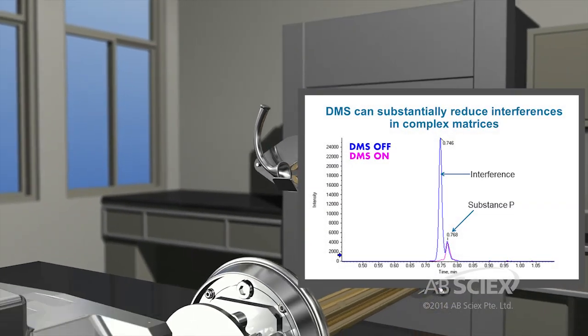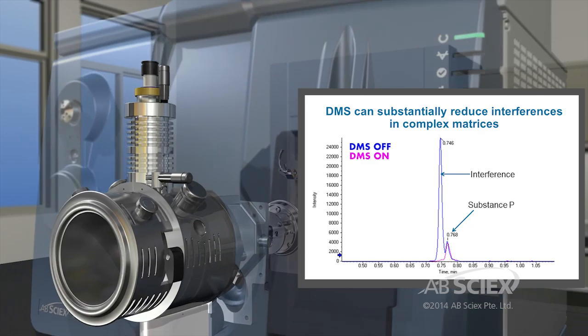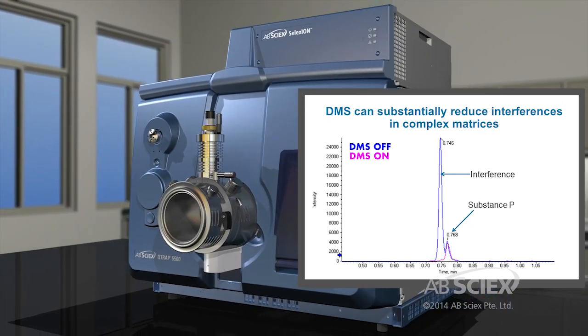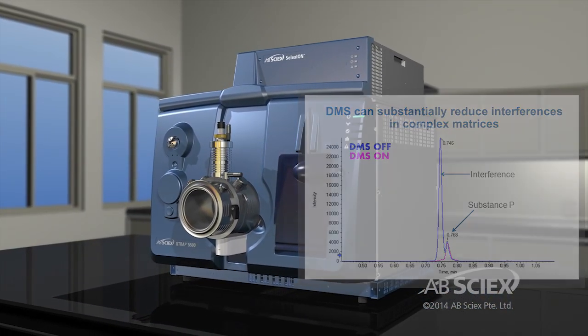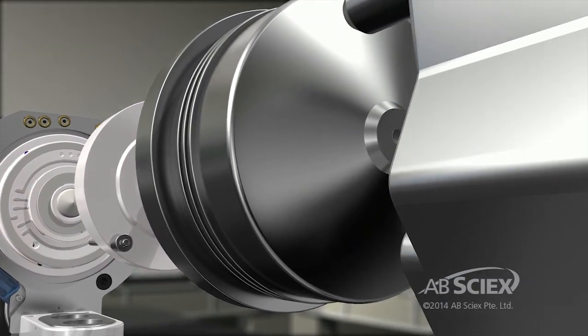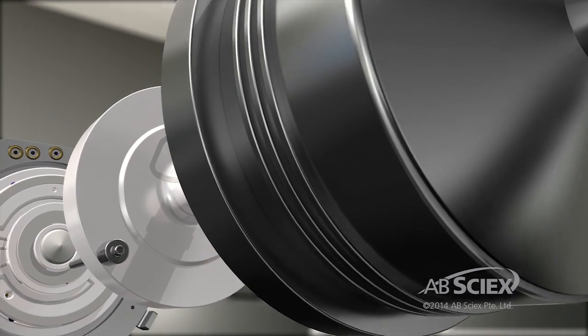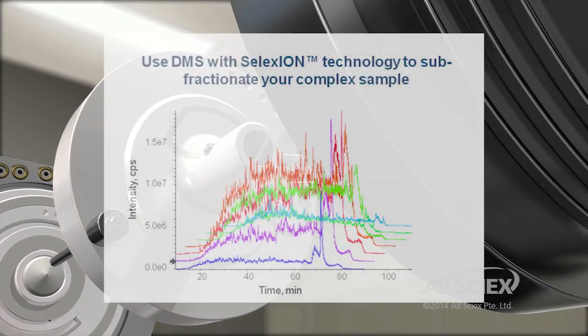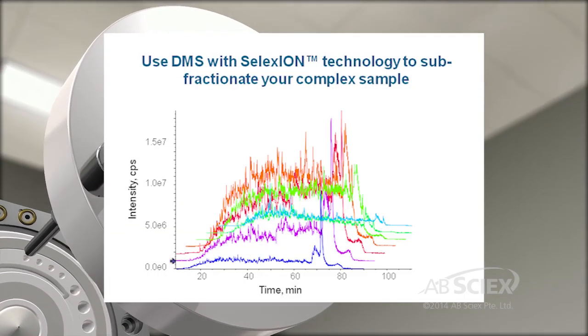DMS can be utilized to remove isobaric interferences, enabling better lower limits of quantitation for MRM analyses on Q-TRAP systems. DMS can be employed on TripleTOF systems to reduce sample complexity for identification and quantification experiments, thereby providing increased depth of coverage and improved confidence.